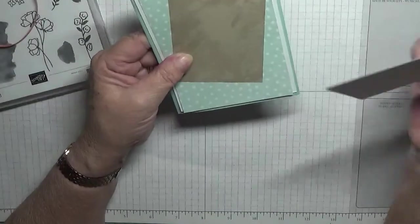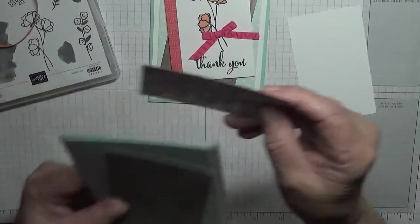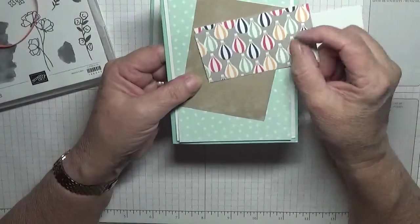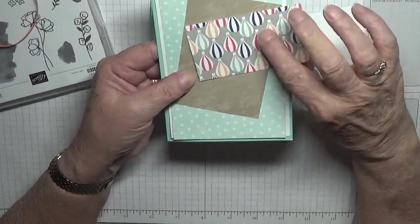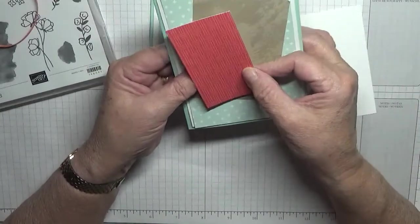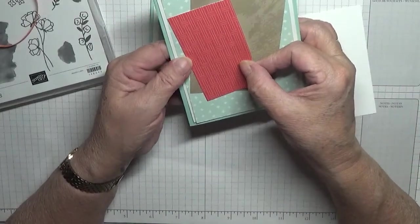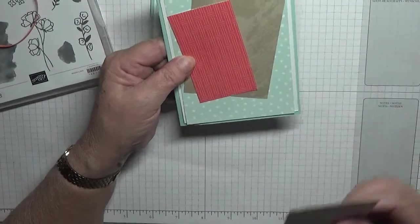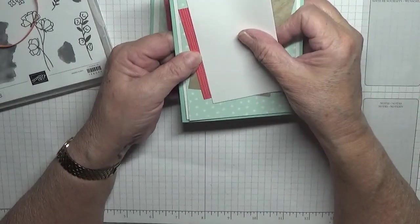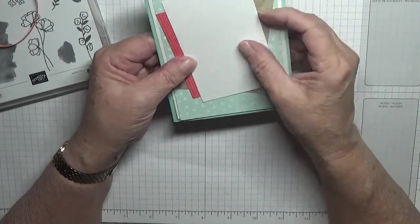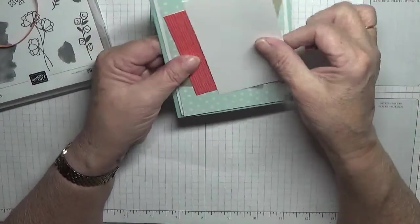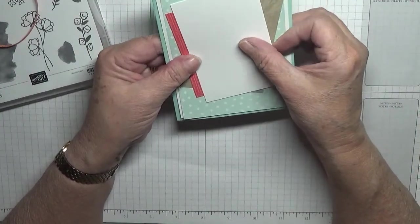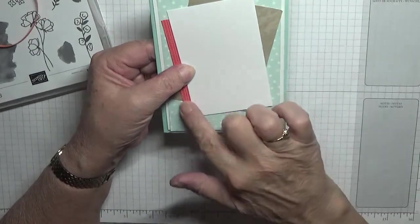And I have a piece of Calypso Coral and this is from a really retired set, Up and Away I think it was called. And that's going to sit there with this covering most of it. So you really don't need all that, you just need a bit to put on the side.